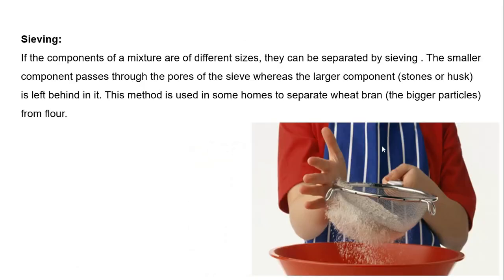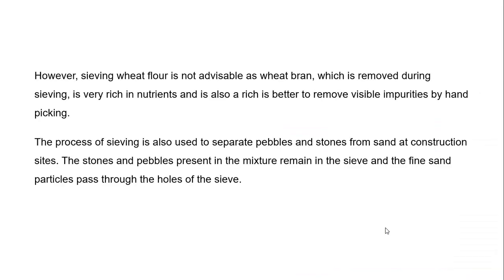Next is sieving. If the components of a mixture are of different sizes, they can be separated by sieving. The smaller components pass through the pores of the sieve, whereas the larger components like stones or husks are left behind in the sieve. This method is used at home to separate wheat bran from flour. However, sieving out flour is not always advisable, as wheat bran — which is removed during sieving — is very rich in nutrients. It is better to remove visible impurities by handpicking.